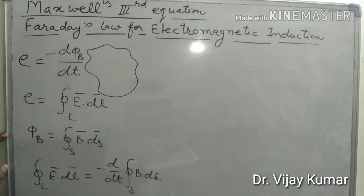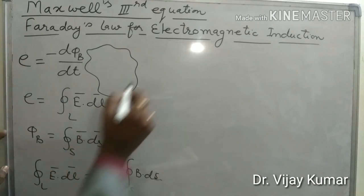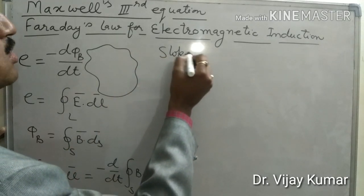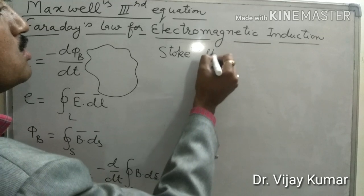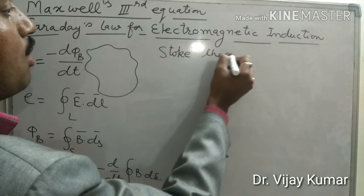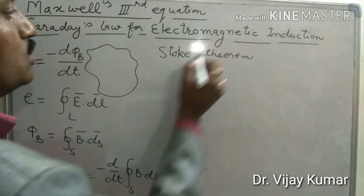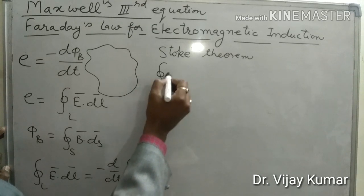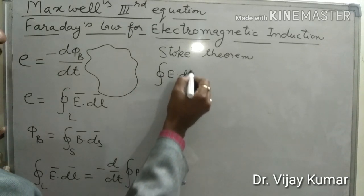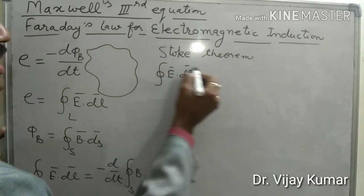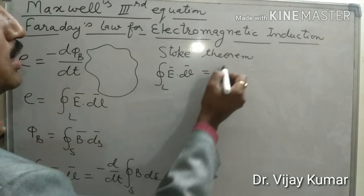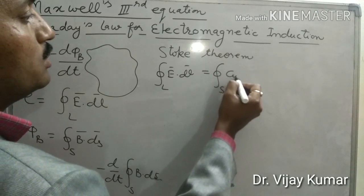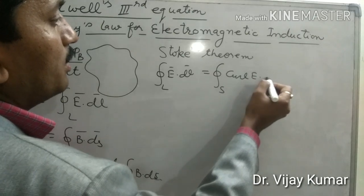Now we apply Stokes' theorem. According to Stokes' theorem, the line integration of the electric field is equal to the surface integration of the curl of that electric field.